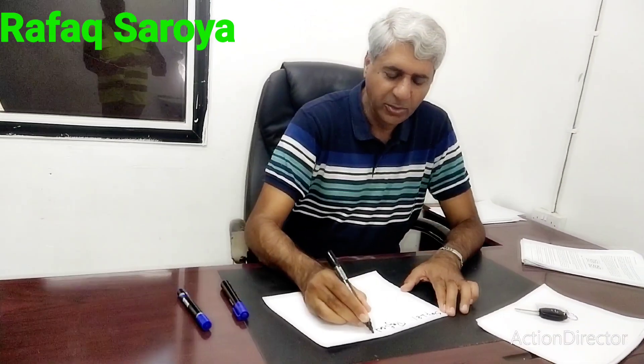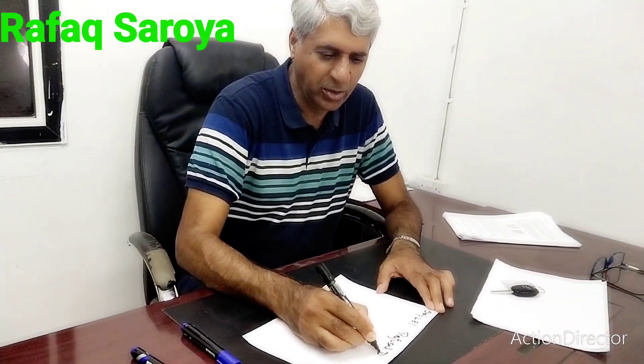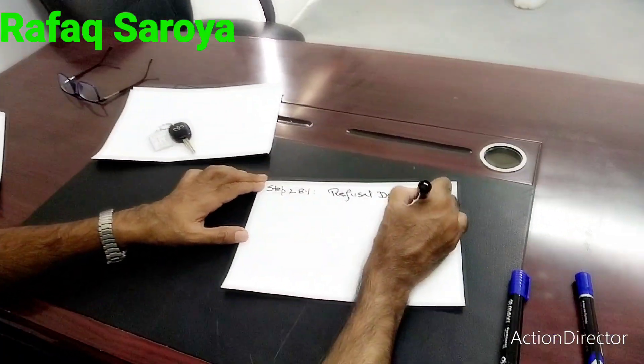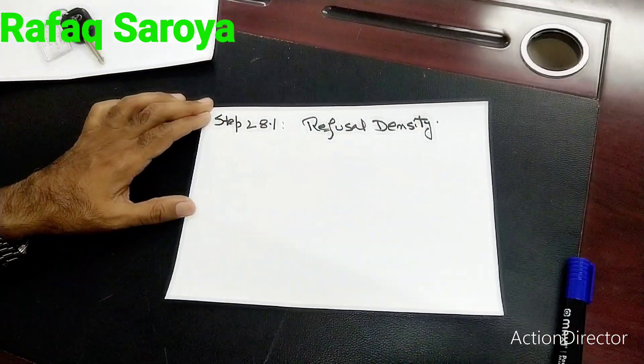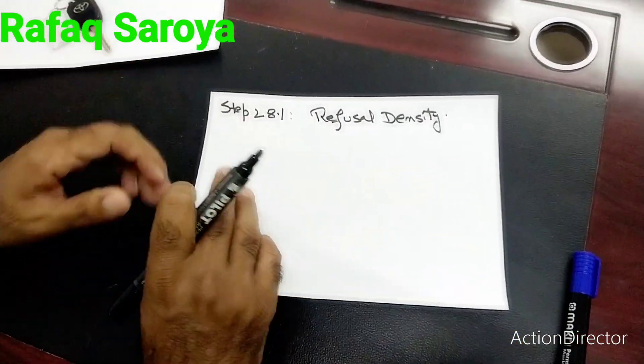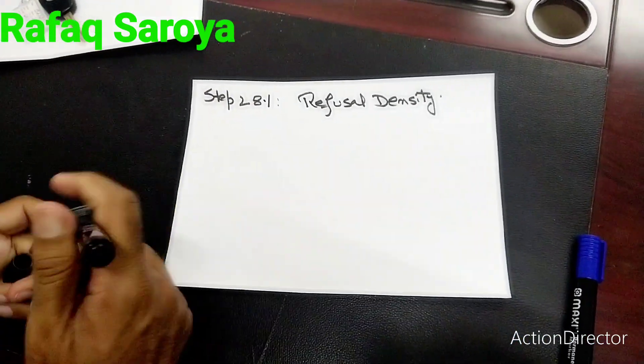Our next step is about the refusal tendency. It is very easy to understand, and I am going to explain it because mostly people have very little concept about it.